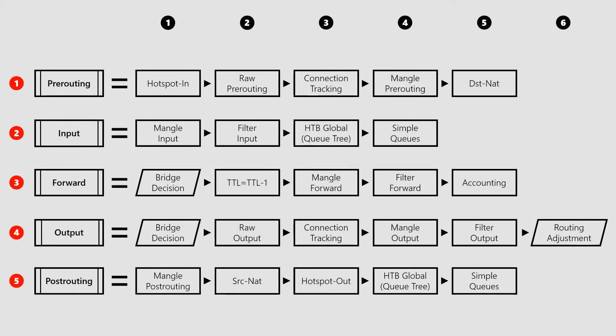Therefore, input traffic has to go through the pre-routing process with five stages and the input process with four stages shown here. In this module, we're not concerned with hotspot or queues. Connection tracking is an active stage through which the packet passes, but we're not going to set any actions for it. Therefore, the stages we need to configure for logging are raw pre-routing, manual pre-routing, and destination NAT, as well as manual input and filter input — stages 1-2, 1-4, 1-5, 2-1, and 2-2.